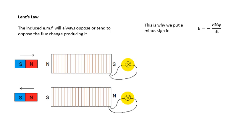Now, Lenz's Law basically says, and learn this word for word, the induced EMF will always oppose, or tend to oppose, the flux change producing it. The EMF will try to stop the magnet moving. It will be a bit like friction. Friction always tries to slow things down. Friction never tries to speed things up. It always tries to stop things moving. And my induced EMF is the same.